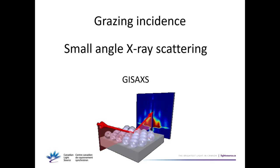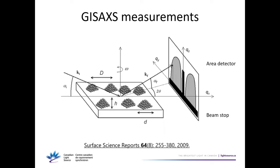The last technique: grazing incidence small angle X-ray scattering, or GISAXS. In GISAXS, all the angles involved — incoming beam and outgoing beam — are all grazing angles. You measure your signal with an area detector protected with a beam stop for the direct beam and sometimes also for the specular beam, so the detector isn't damaged. It gives you information about buried nanostructures. The scattered signal has two components: one from the nanostructures themselves — their size, shape, and density give a form factor, which is the Fourier transform of the nanostructure shape.